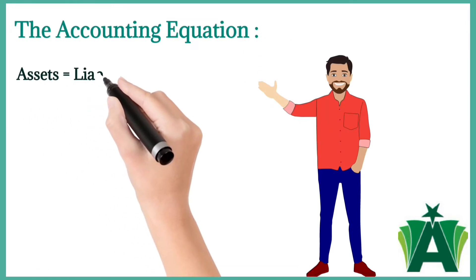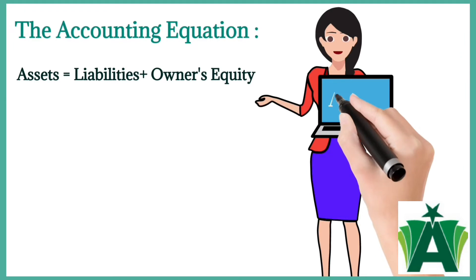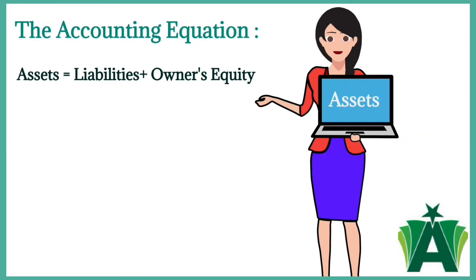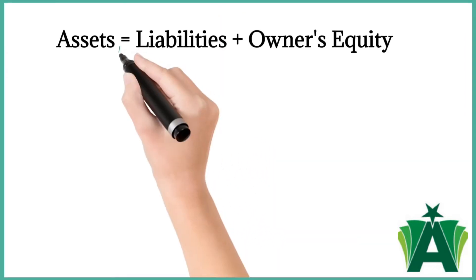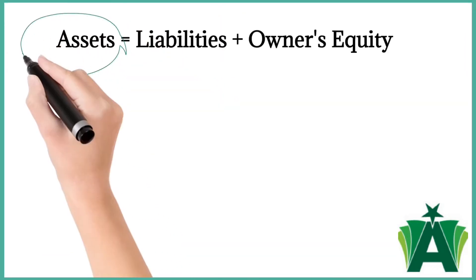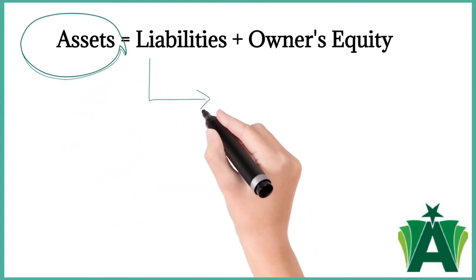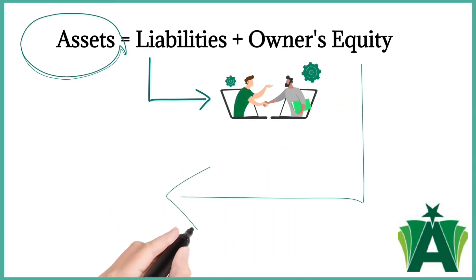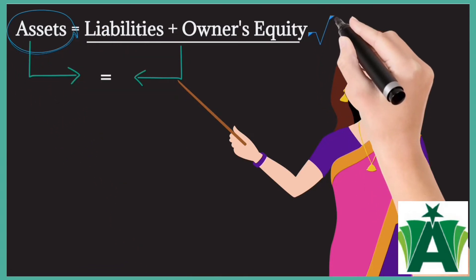The accounting equation is: Assets = Liabilities + Owner's Equity. The three basic elements of accounting are assets, liabilities, and owner's equity. Assets represent the things of value that a business owns. Liabilities are the claims of the creditors against those assets. Owner's equity is the claim of the owner against those assets.